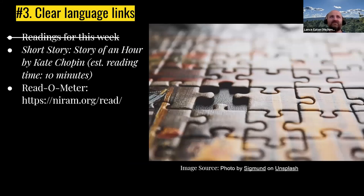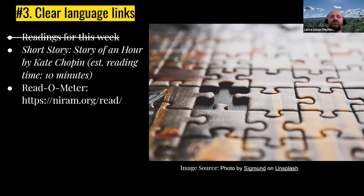Clear language and links — I can't emphasize this enough. Anytime you're giving links or materials into Google Classroom, be really clear about what they are actually going to see when they click on that. Instead of just saying 'readings for this week,' which can be super frustrating with no contextual information, try something like: 'Short story — Story of an Hour by Kate Chopin, estimated reading time 10 minutes.' Provide the relevant information: the title, who it's from, and a rough guide of how much time they can anticipate spending on it.